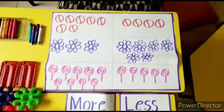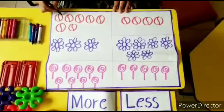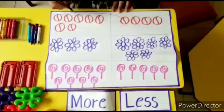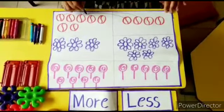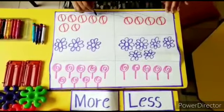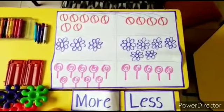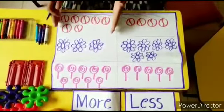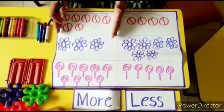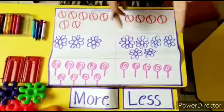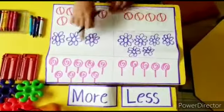Now there is one more method for comparing. We will pair one from this set and one from this set like this. In which group are the extra balls remaining? We can see in this group there are extra balls. The group with extra objects has more and the group already paired has less.